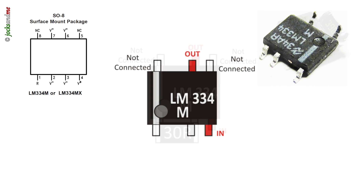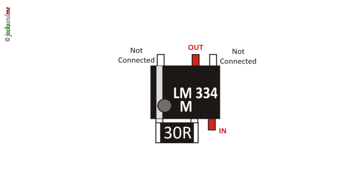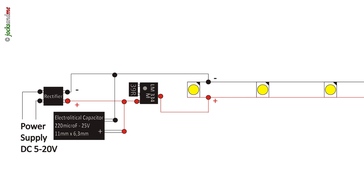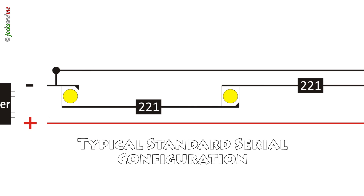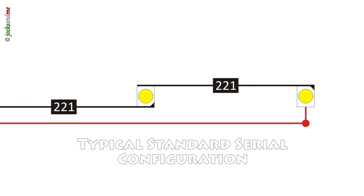At this point we are ready to solder the resistor in order to obtain the current that we want. As you may see from the scheme, it is very simple. We just have to pay attention to connect the capacitor between the rectifier and the current regulator, as it has to be charged with the high voltages coming in. In comparison to a typical serial configuration, the system has a far better efficiency.